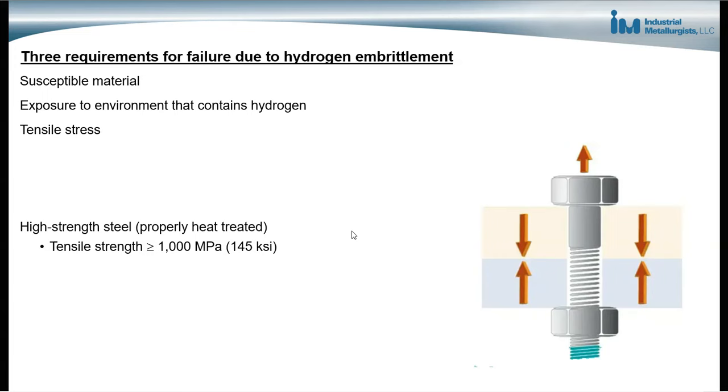There are a number of different materials that are susceptible to hydrogen embrittlement. I'm going to focus on steel for this short video. So with steels, we're concerned about high strength steels. These are steels that have been properly heat treated. And they would have tensile strengths greater than about 1000 MPa or have a tensile strength greater than 145 Ksi. And this shows a fastener that's been installed. And when a fastener is installed, there are tensile stresses on the fastener that can lead to cracking if the material has been embrittled due to hydrogen embrittlement.